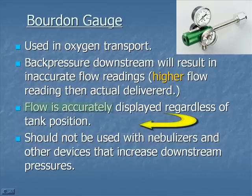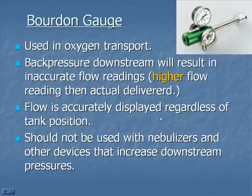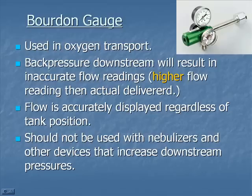However, an advantage of the Bourdon gauge is that it will read accurately regardless of the position of the tank. A Thorpe tube with a little ball cannot be flipped or laid on its side and still read accurately. With the Bourdon gauge, you can lay the tank on its side and still get an accurate reading. These are not really designed to be used with nebulizers because of the back pressure downstream, which could give an inaccurate reading.